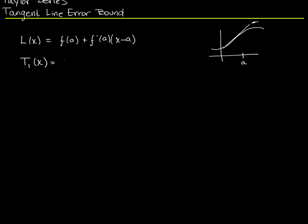It's a polynomial of degree 1 that we use to approximate a curve near the point a. If we're at the point a, the value of the function and the value of the line are the same, because that line is tangent to the function at a. Near a, when x is a little more or less than a, we can approximate this curve using this line. One of the questions we're going to need to ask is: how big is the potential error, given how far away we are from a, for that approximation?